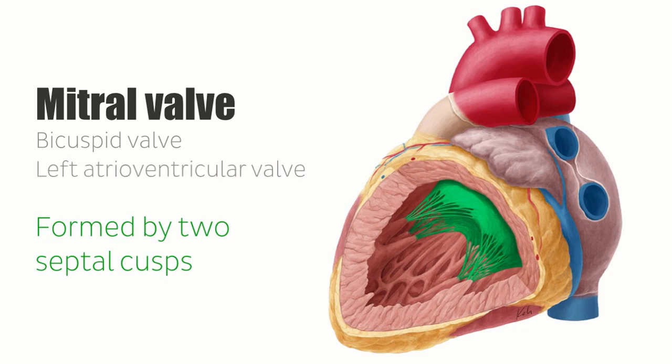The blood supply to the left atrium is governed by the left circumflex coronary artery, and it is drained by the oblique vein of the left atrium, which arises during embryonic development from the left side of the fetal superior vena cava.